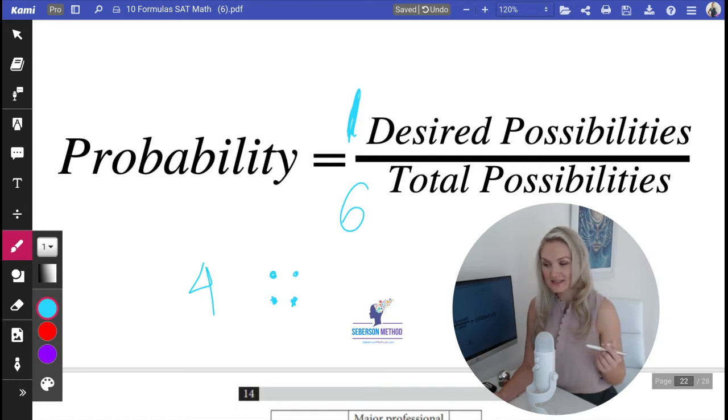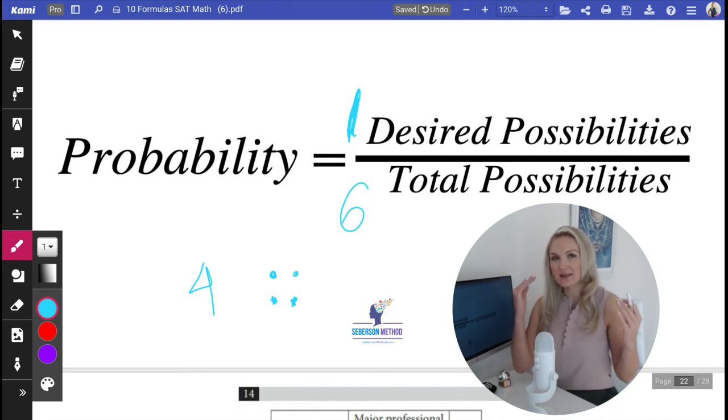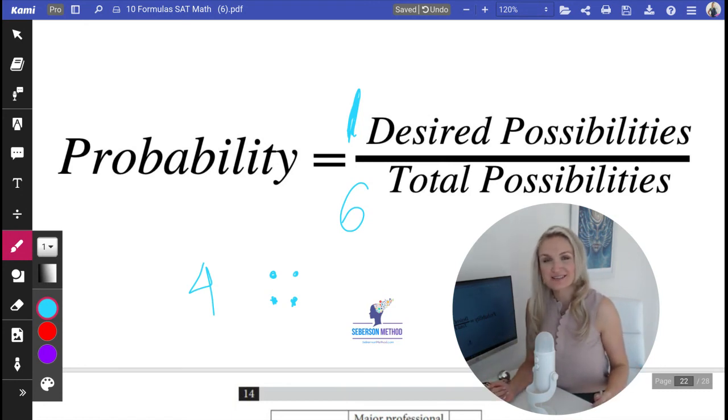This is the principle of probabilities and possibilities - the desired, which is usually going to be less than the total. Again, these are your proportions, your cross multiplication techniques. Everything is going to be very helpful.